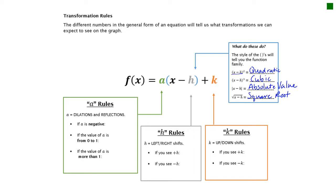If your a value is negative, that means you have a reflection. If your a value is between 0 and 1 — where the number on top of your fraction is smaller than the bottom — that means your fraction is less than 1, and you'll have what's called a vertical shrink, which makes the graph flatter. If your a value is more than 1 — a whole number or a fraction where the top is bigger than the bottom — you'll have a vertical stretch, which makes your graph narrower.